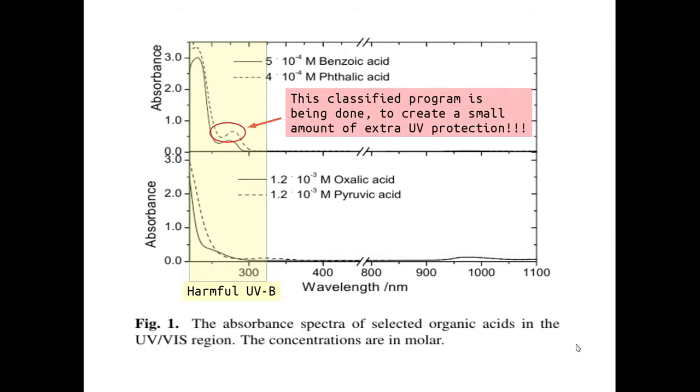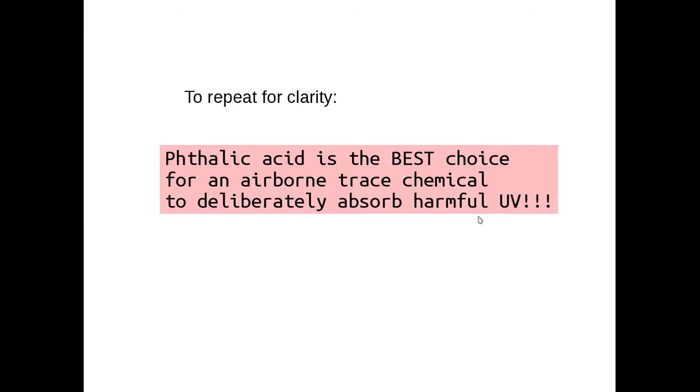This classified program is being done to create a small amount of extra ultraviolet protection. Here's 250 nanometer germicidal ultraviolet which breaks DNA in seconds and up to ultraviolet A which starts about 315. So, it's this small hump in this dashed line right here that is the whole reason for this program. And its absorbance is maximum of about 0.5 here.